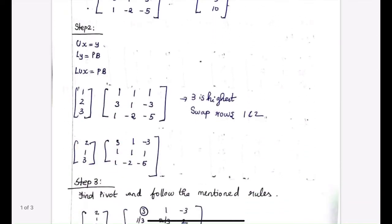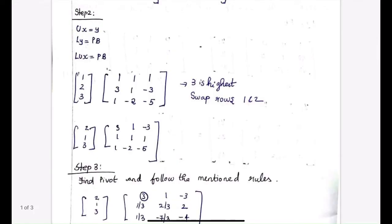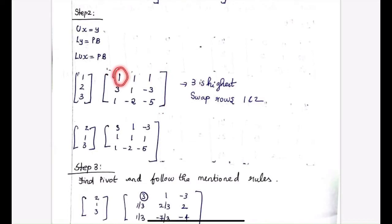In the second step, what we do is we try to find the pivot element. The pivot element is basically the element on the top left side of the matrix. However, the pivot element needs to be the largest element in its column. So three is the largest element in this column. What we do is we swap the first and second row, and the A matrix changes from this to this.